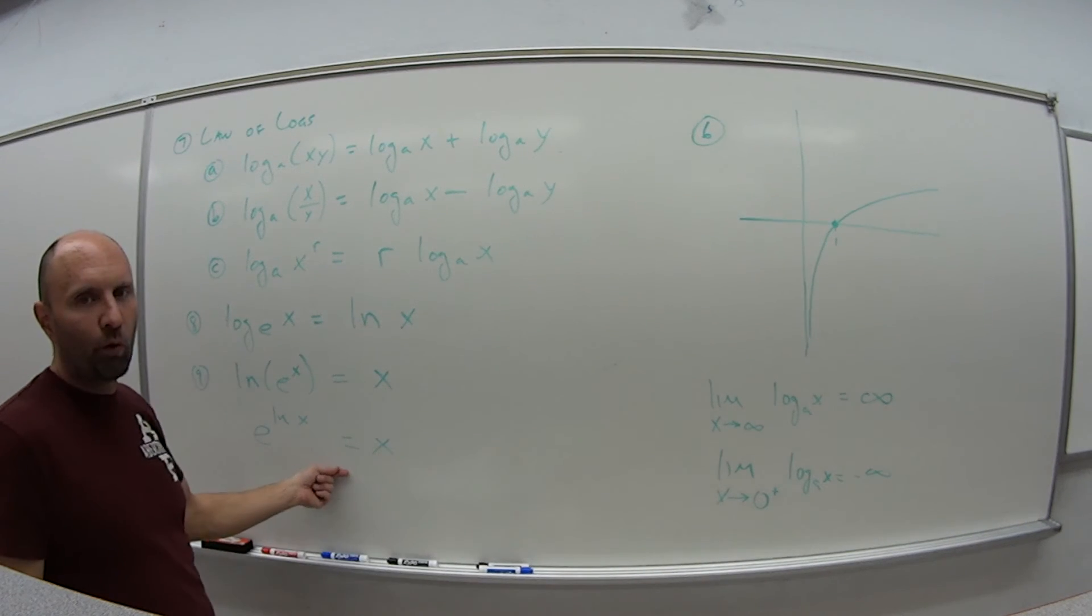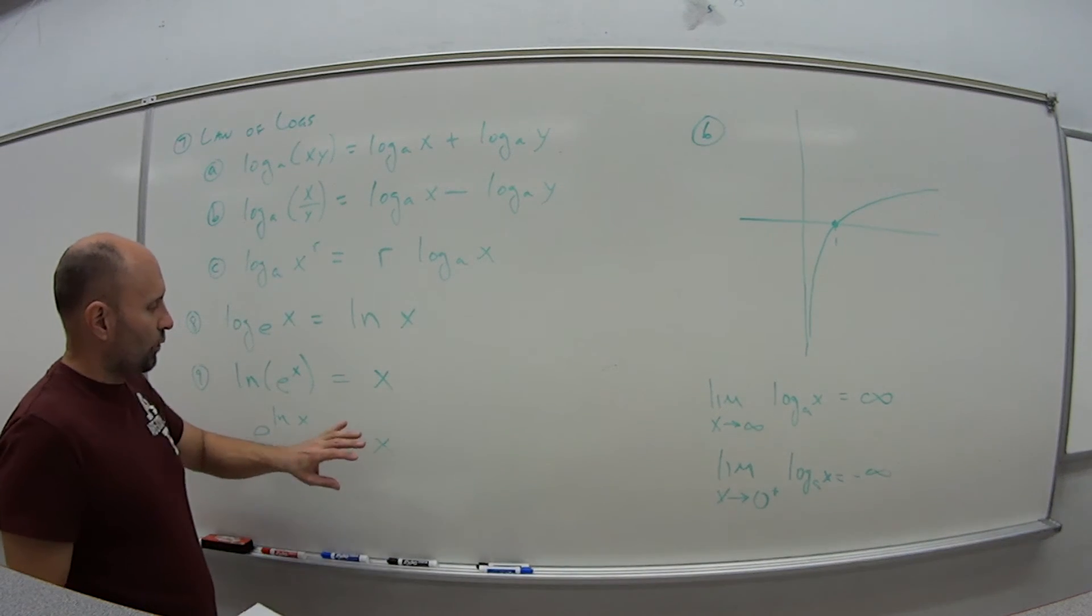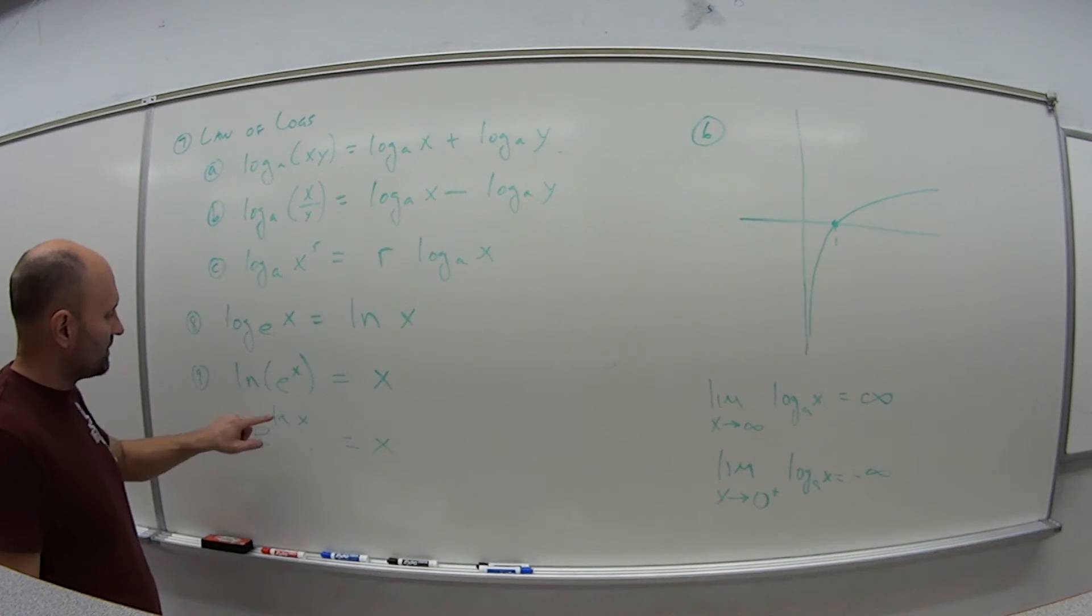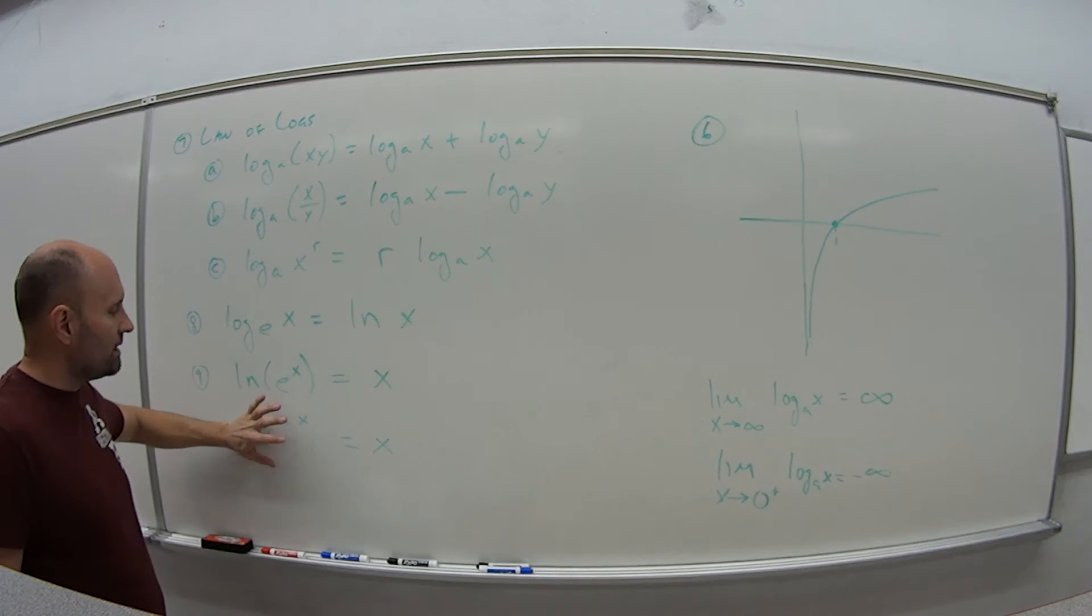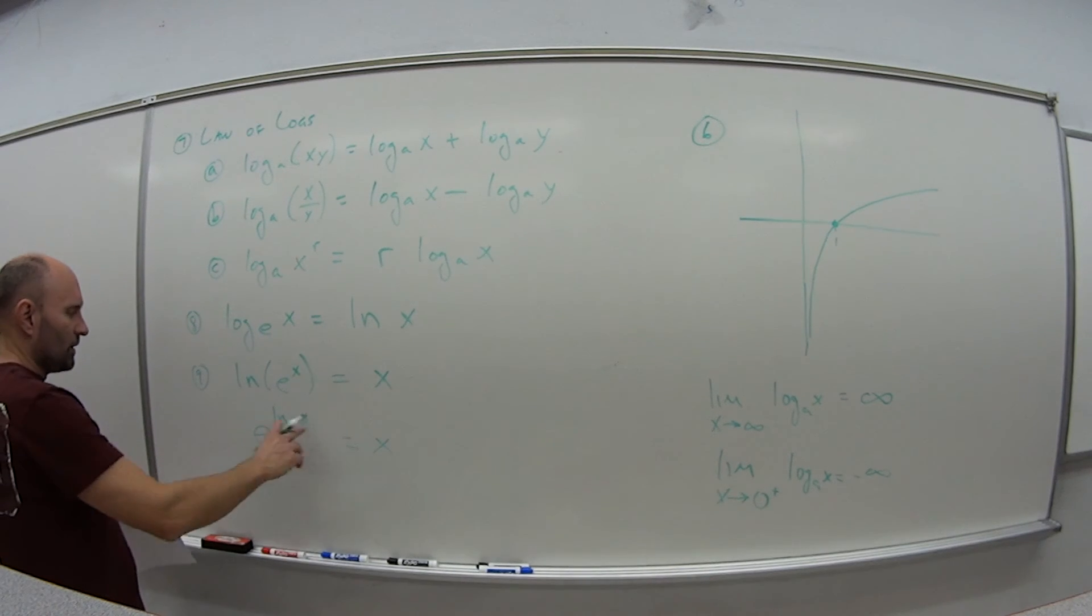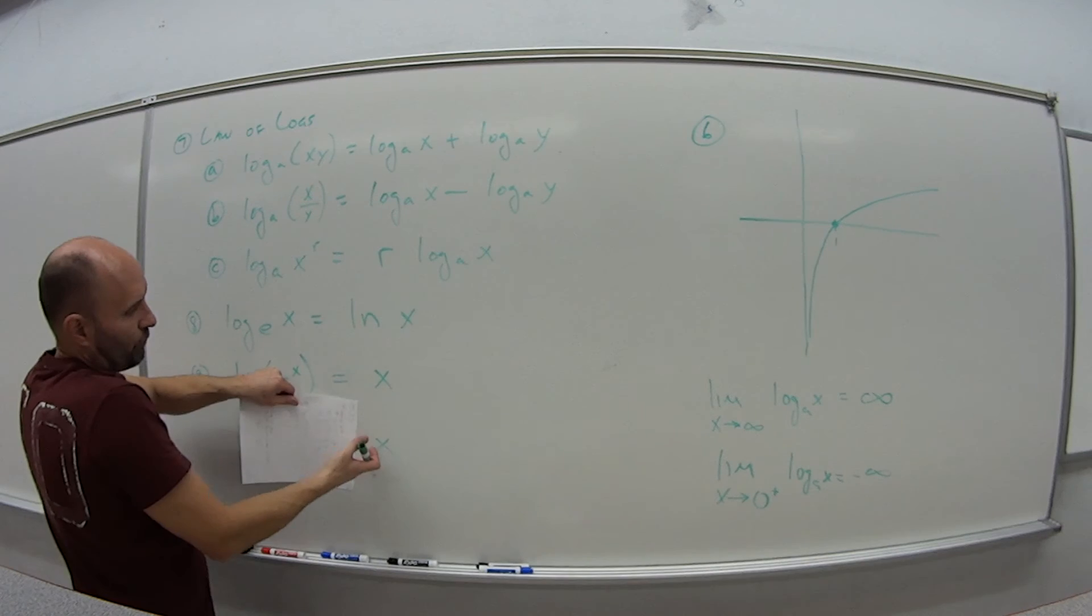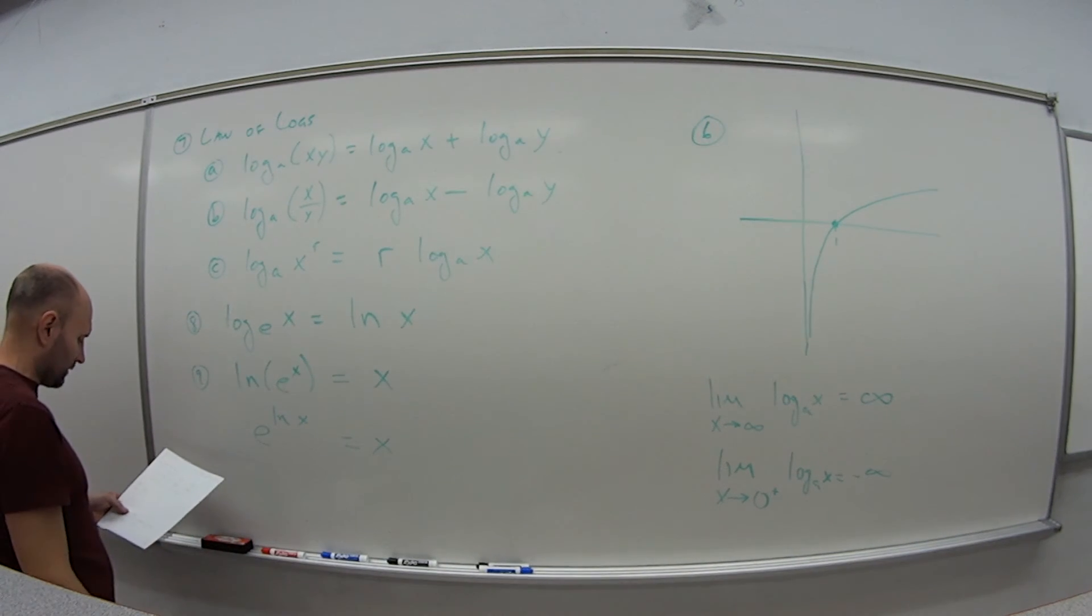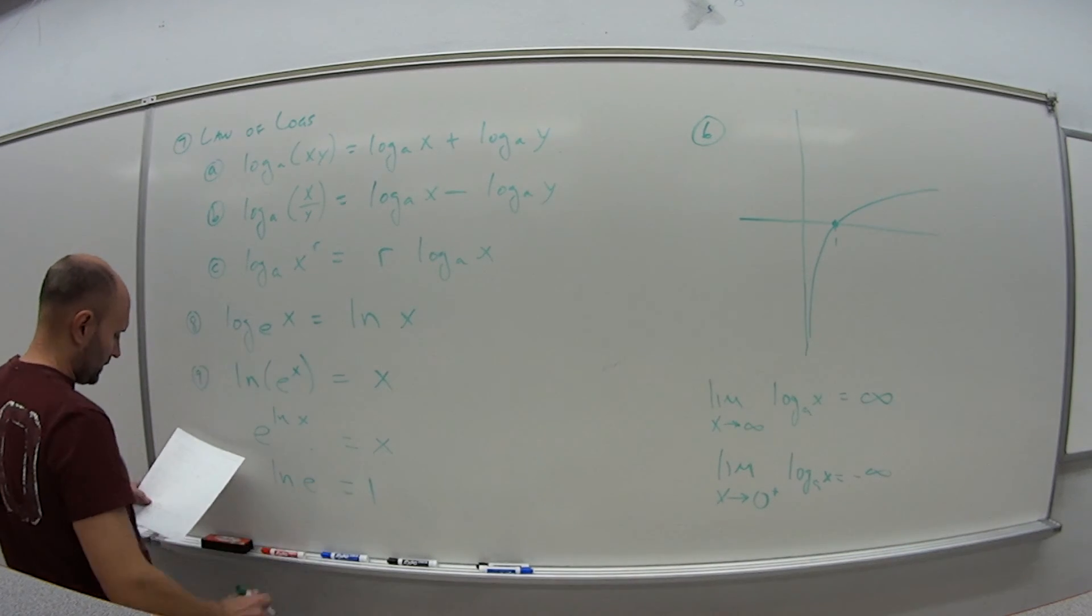And this is important because when we're taking derivatives sometimes in the future here, we might have some function, but if we rewrite it as E to the natural log of that function, then we can take the derivative of E. That might be a lot easier sometimes than just taking the derivative of this function. So this is useful because we can rewrite something that's pretty straightforward, X, as E to the natural log of X if we need to be taking derivatives. And the natural log of E is just one.